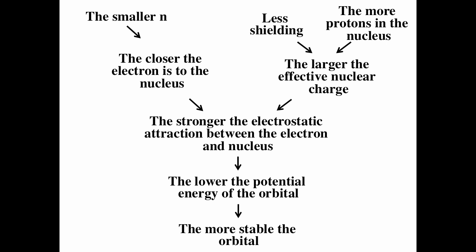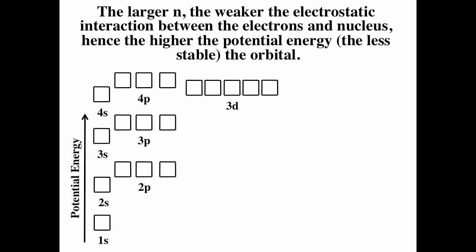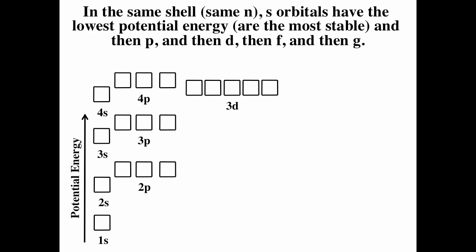Two basic considerations: how close the electrons are to the nucleus, and what is the effective nuclear charge. Using these two ideas, we can get this energy level diagram. The 1s orbital is the lowest energy orbital because it's the closest to the nucleus. The smaller the n, the closer the electrons are to the nucleus, the more stable the orbital. Because of shielding, within a shell, s is less shielded than p, which is less shielded than d. So within a shell, s is lower in energy than p and d. This energy level diagram comes from those two things: smaller n means closer and stronger attraction, and within a shell, s is lower than p, lower than d.